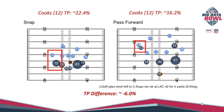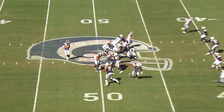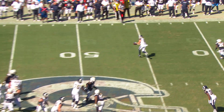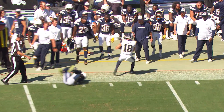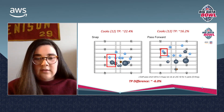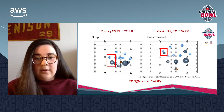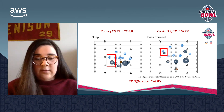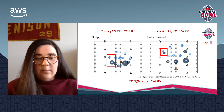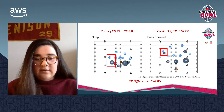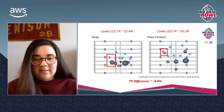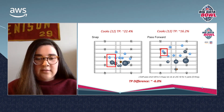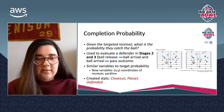At snap, Cooks has a 22.4% chance of being targeted, and at pass forward he has a 16.2% chance of being targeted. The target probability difference in these two events is negative 6%. Aggregating these differences for each defender on each play, where they're staying with the same receiver at both events, I came up with the stat targets averted — which essentially means how many targets the defender took away from just his coverage in that stage of the pass.